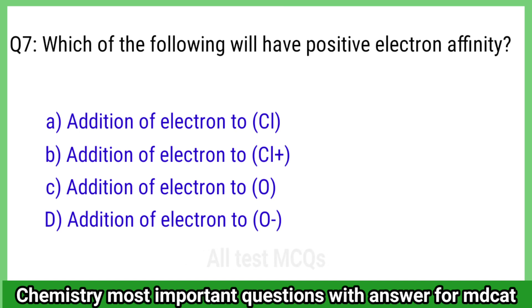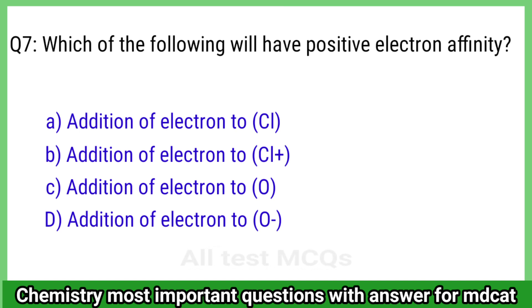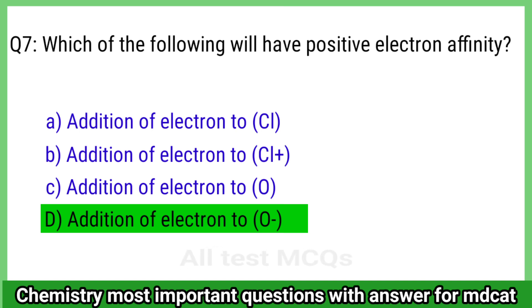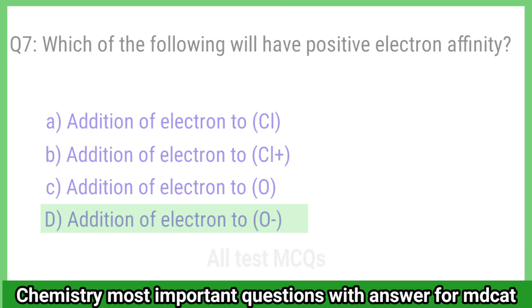Question 7: Which of the following will have a positive electron affinity? The right answer is option D, addition of an electron to oxygen.